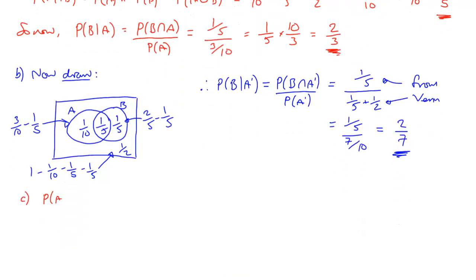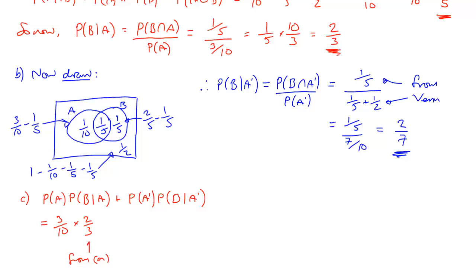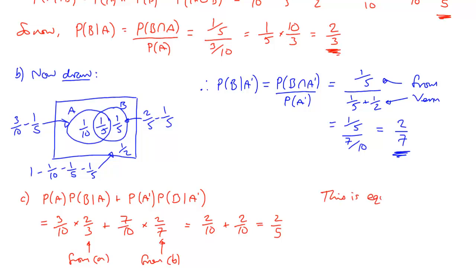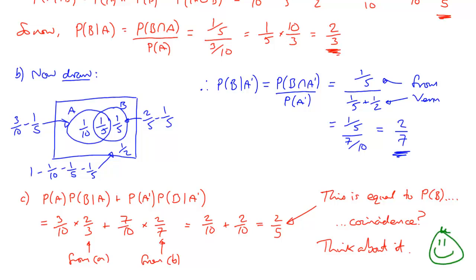Last but by no means least, part C. It wants you to calculate this rather complex-looking expression. It seems random but actually isn't — there are four quantities we already know, two from the start and two worked out in previous parts. When we put it all together, we get two fifths. This just happens to be the value for the probability of B. Do you think this is a coincidence? Think about what that link means and ask me about it if you want to know. That brings us to the end of lesson two — I hope you enjoyed it, see you in class.